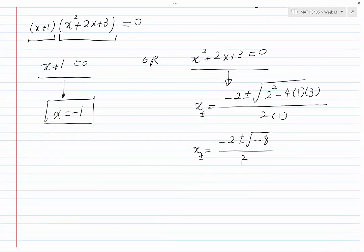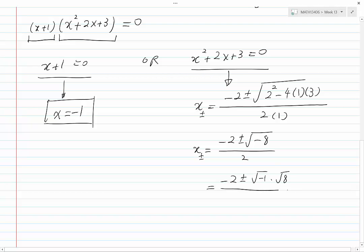Minus 2, plus or minus, and under the root, we can see that our roots are complex. We can rewrite the roots as minus 2 plus or minus root minus 1 times root 8 divided by 2,